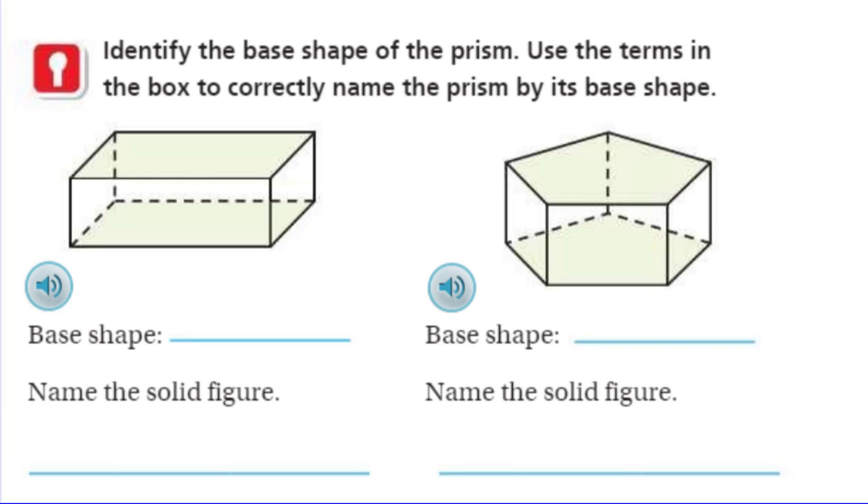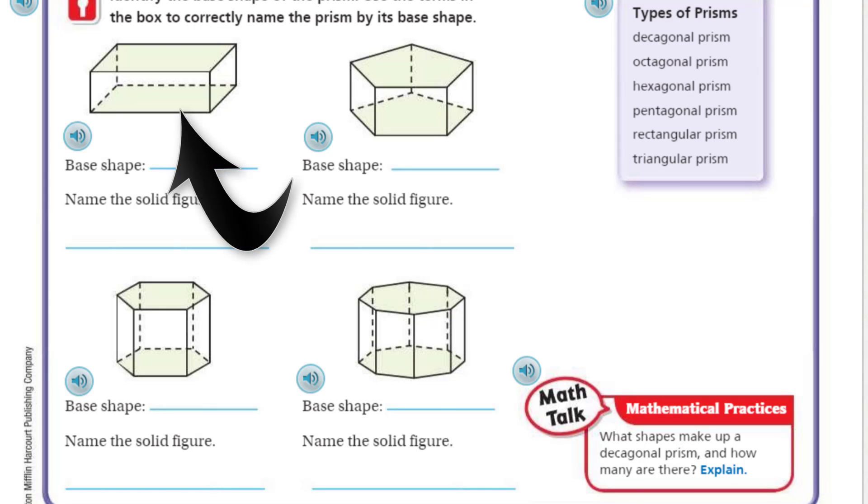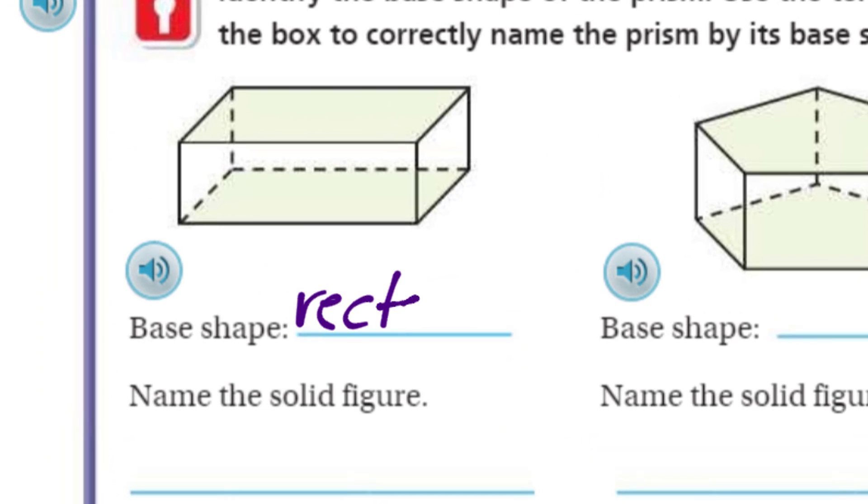Identify the base shape of the prism. Use the terms in the box to correctly name the prism by its base shape. Well, the base shape there looks like a rectangle. So would it be a rectangular prism? I'm liking it. I always like to see the choices and make sure. Let me go to the next one. What does that one look like? Oh, five sides—one, two, three, four, five. That looks like a pentagon. We do have a pentagonal prism. It's a rare shape. Then the other one looks like one, two, three, four, five, six sides. That would be a hexagonal prism. I'm probably not saying that right, but it's another weird shape. And the other one—oh my goodness, that has to be like a stop sign, right? One, two, three, four, five, six, seven, eight. That's right, octagonal prism. I'm pretty comfortable those are going to be my answers.